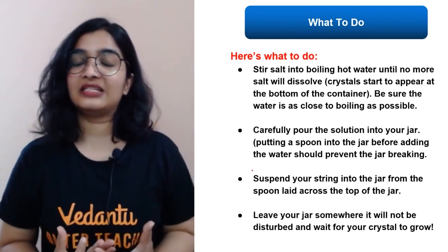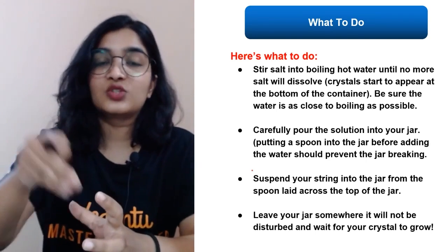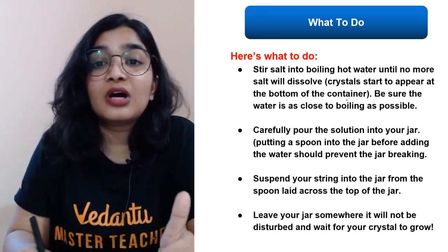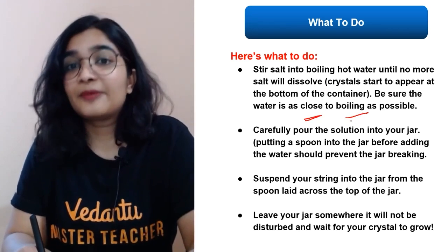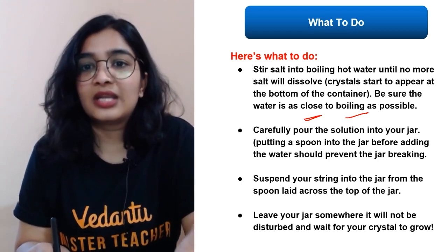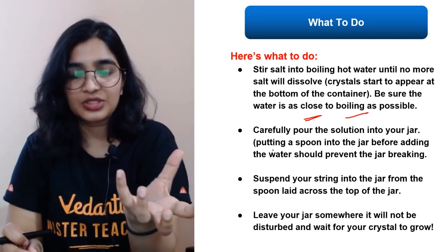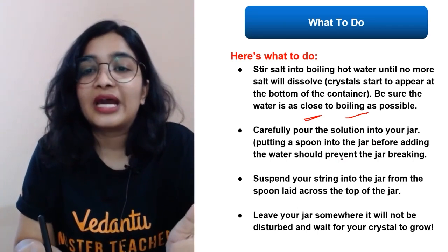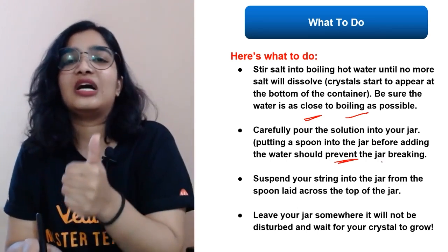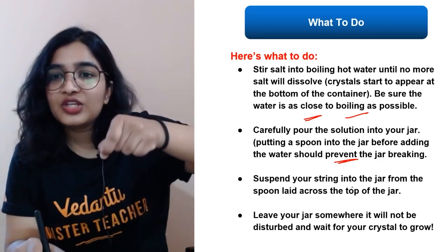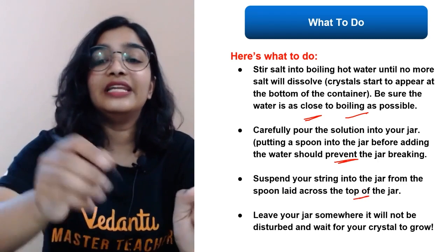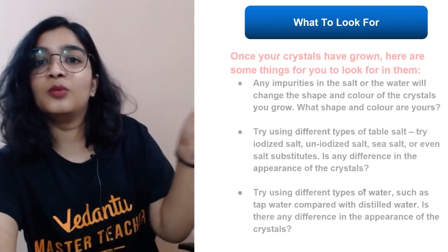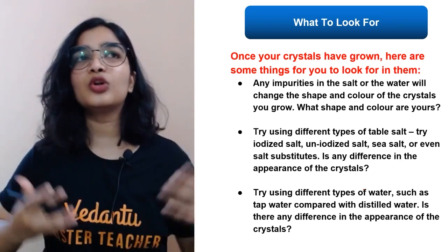Steps to grow crystals at home: stir salt into boiling water until no more salt will dissolve — that is a saturated solution. Make sure the water is as close to 100°C as possible. Carefully pour the solution into your jar, placing a spoon in the jar before adding the hot liquid — the spoon prevents the jar from breaking. Suspend your string into the jar from the spoon placed across the top. Leave the jar somewhere it will not be disturbed.